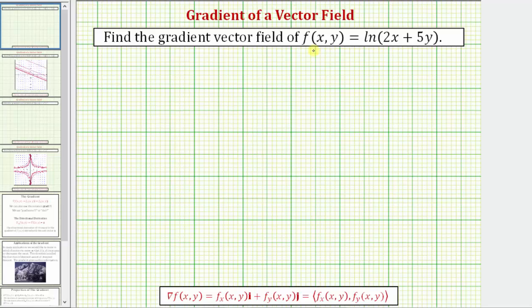We want to find the gradient vector field of f(x, y). Notice how we have a function f of two variables, and therefore the gradient of f is going to be a vector field with two components: an x component and a y component. We use this notation for the gradient of f, and we often say del f. This is equal to the vector field where the x component is the partial derivative of f with respect to x, and the y component is the partial derivative of f with respect to y.